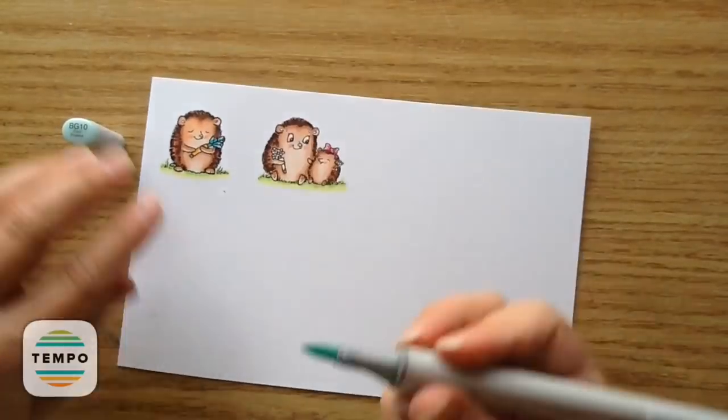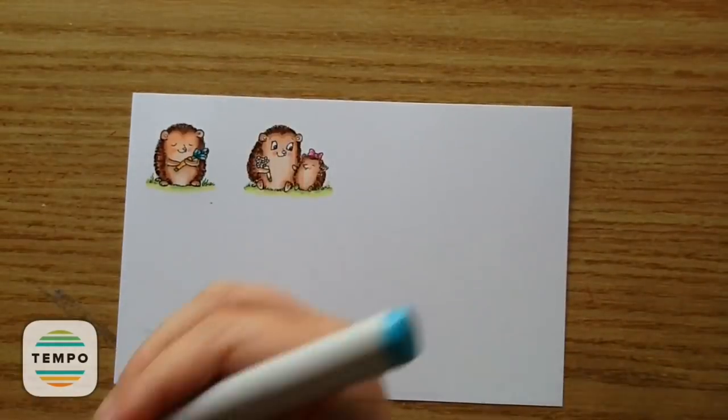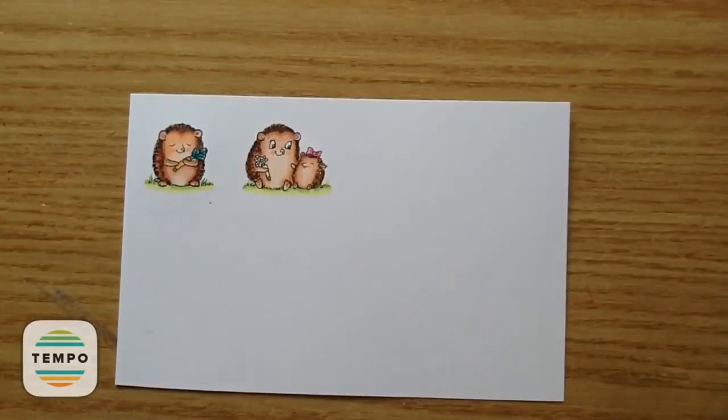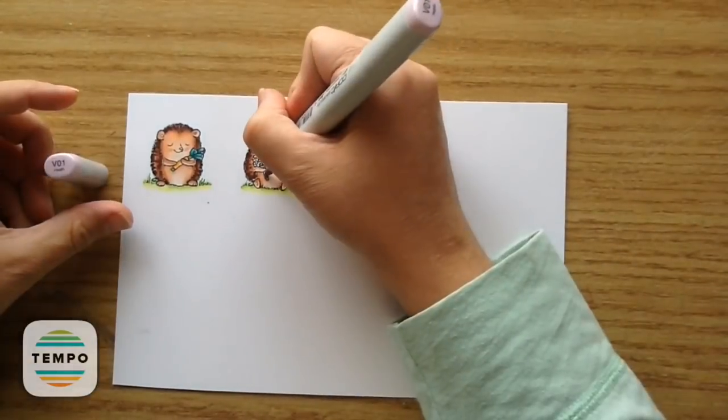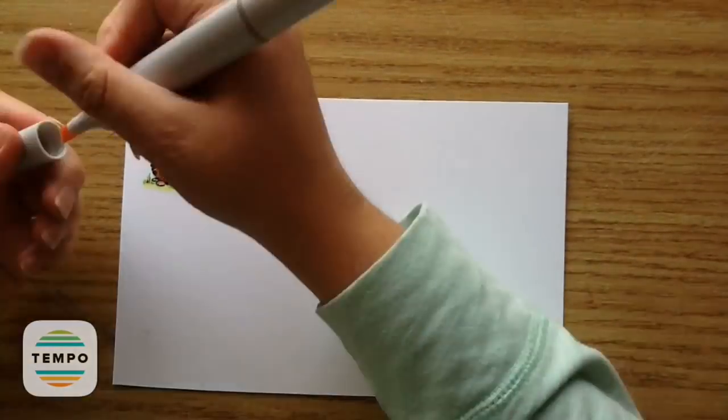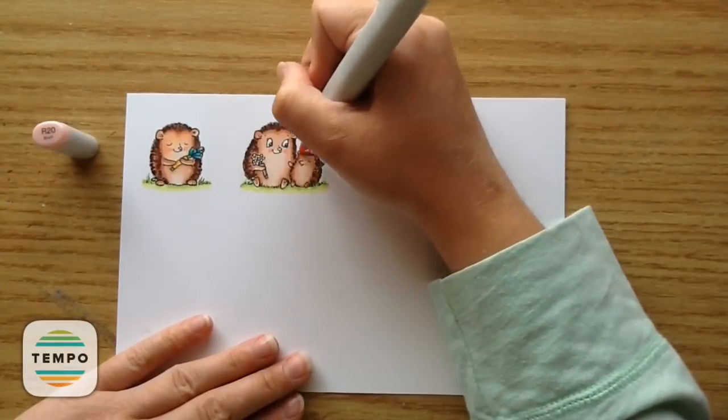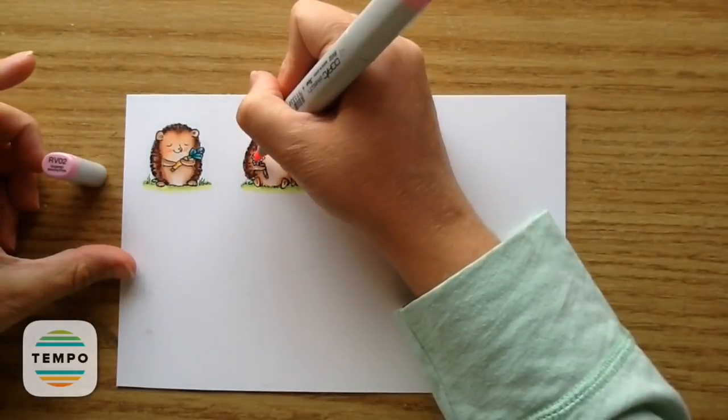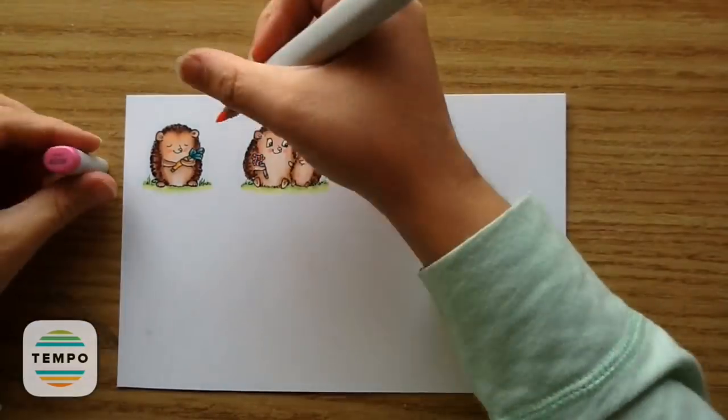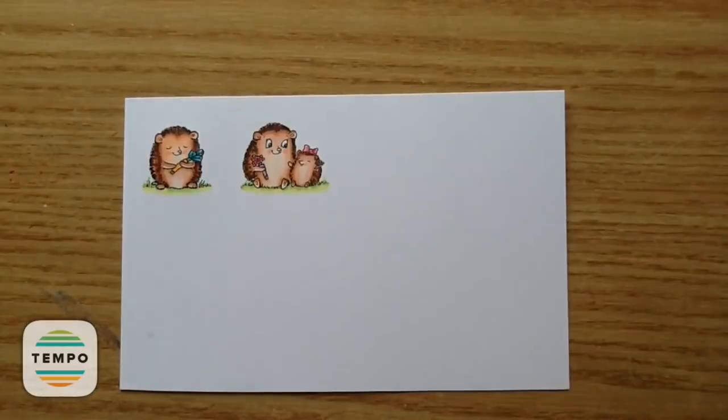For those cute blue flowers I used BG15 and BG10. And I went in with a little bit of BG49. Then for the purple flowers I used V01 and V17. And I did that as well for like the handle part of the flower. And I went back in with R20 for their little ears and their little feet as well. And then I used RV02 and RV06 for these little flowers here.